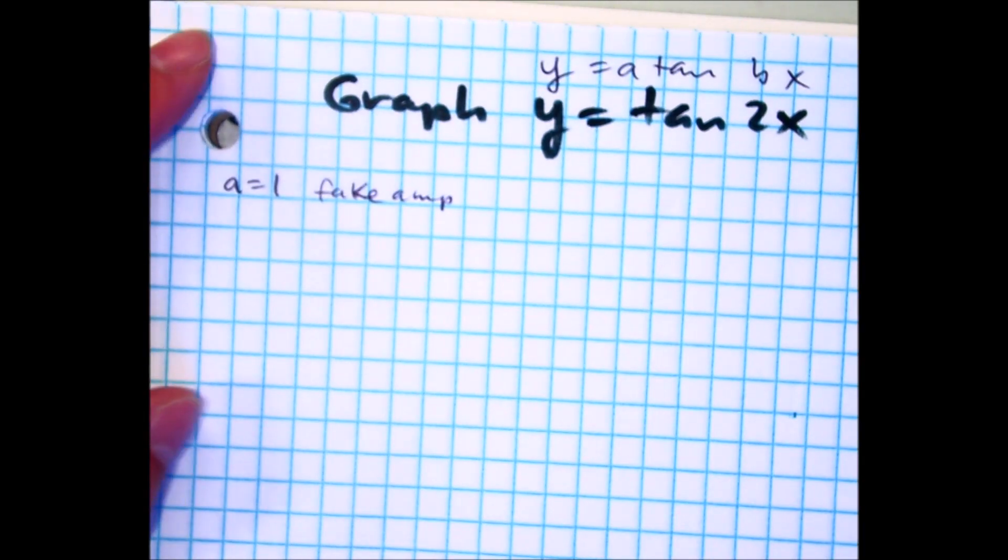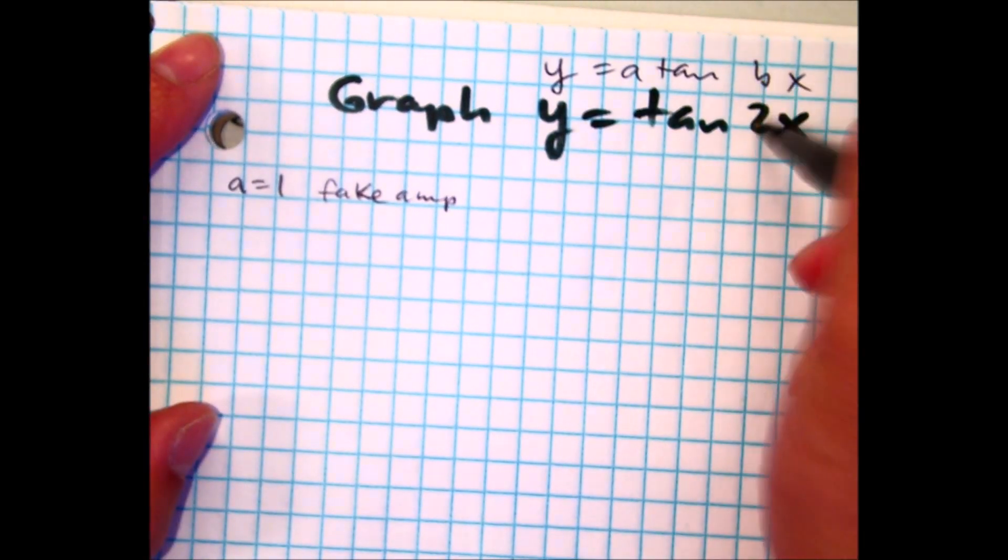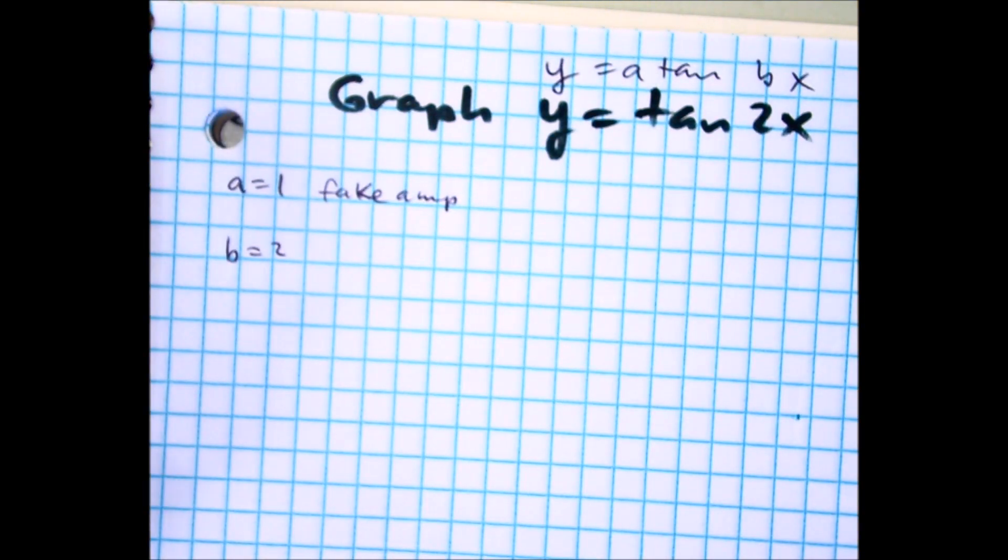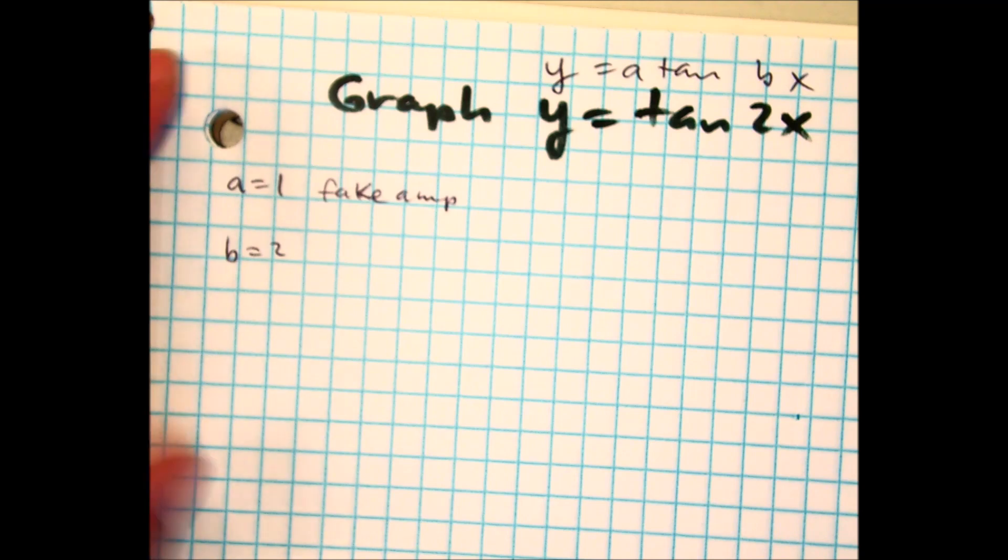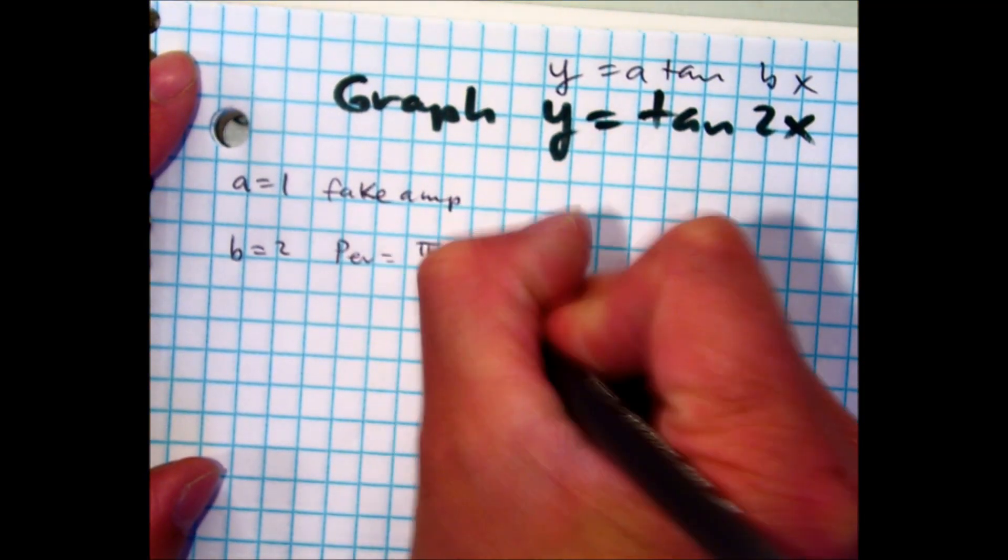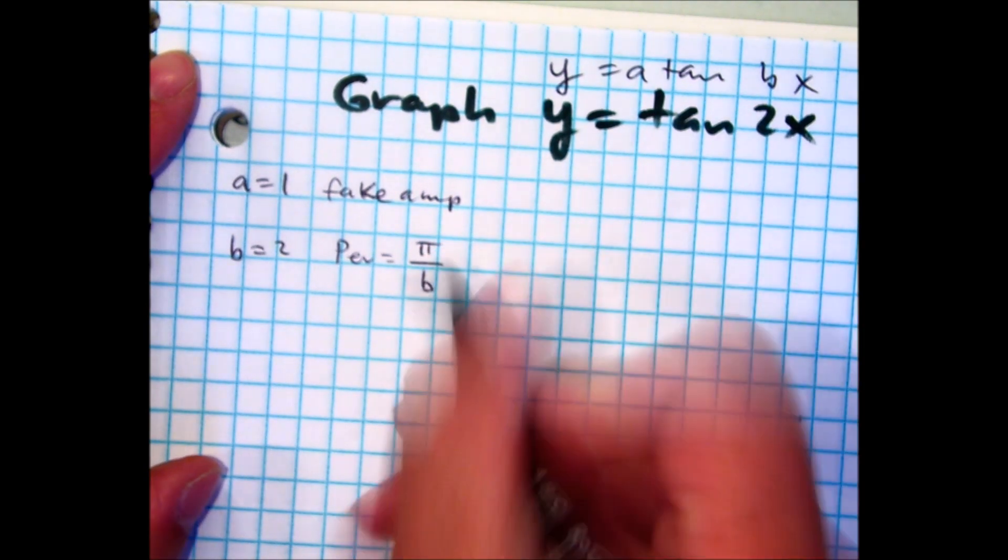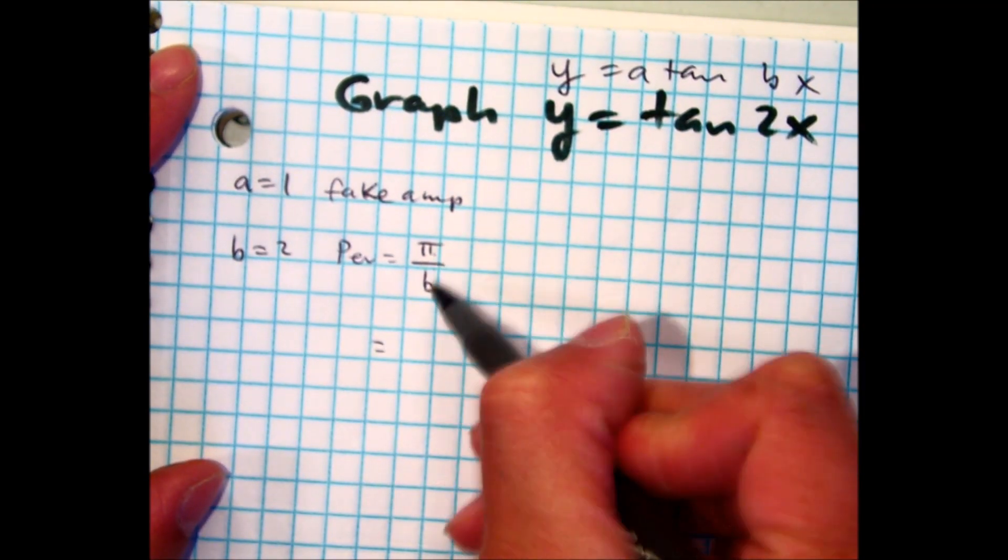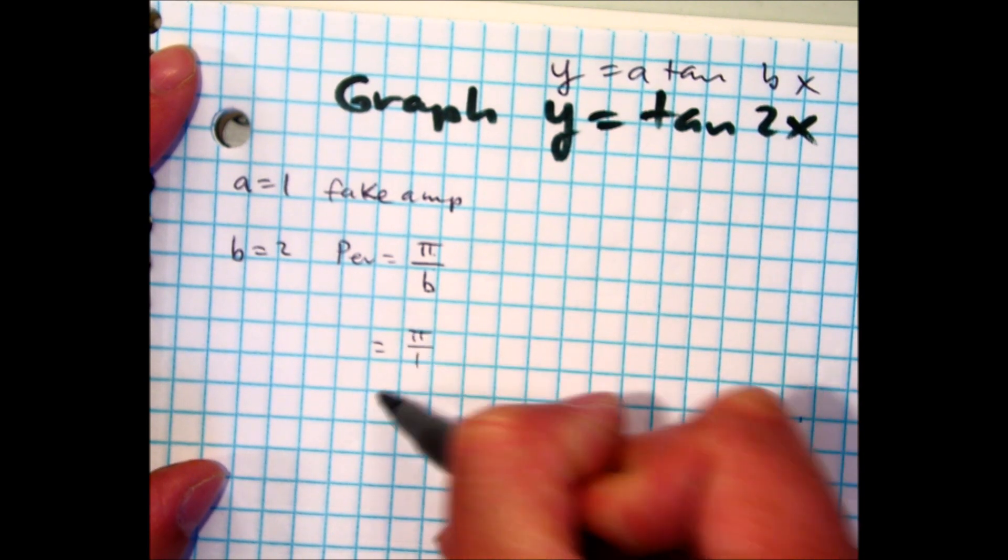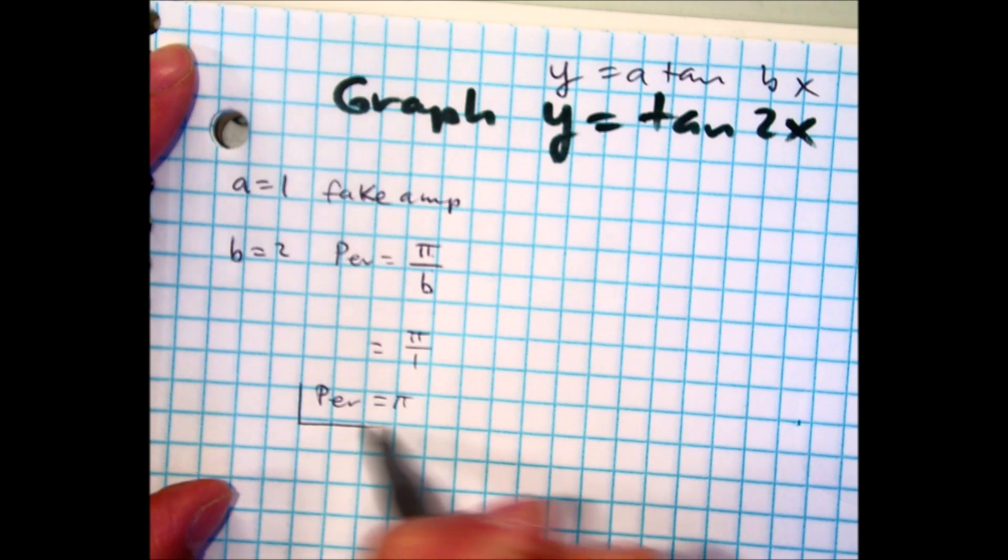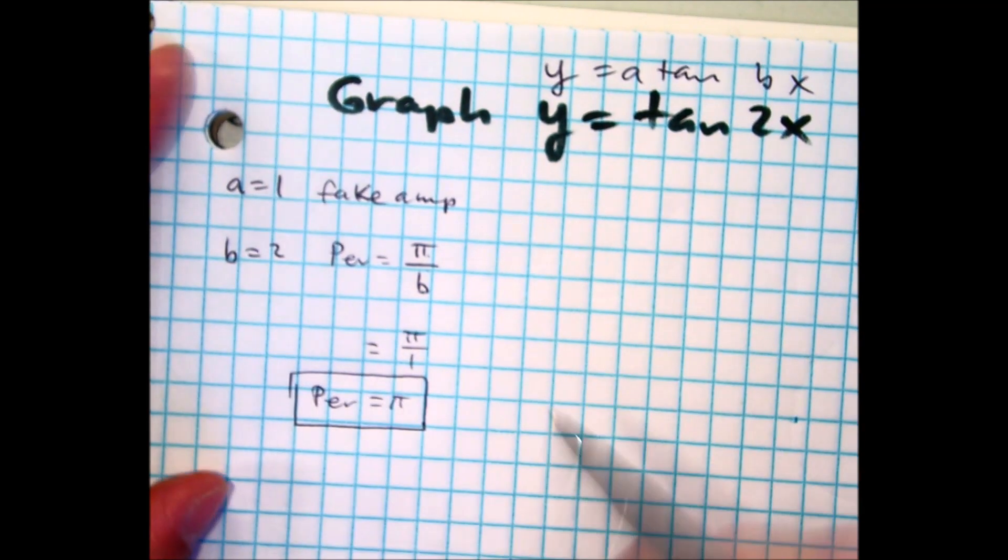Class, our b value? Two. Our b value is two. Partner a, tell partner b, what's the equation for the period? Our period should be pi over b. I've heard many of you guys say that. Good job. So then pi divided by two, or pi over two. The length of the graph to start and end is pi over two.